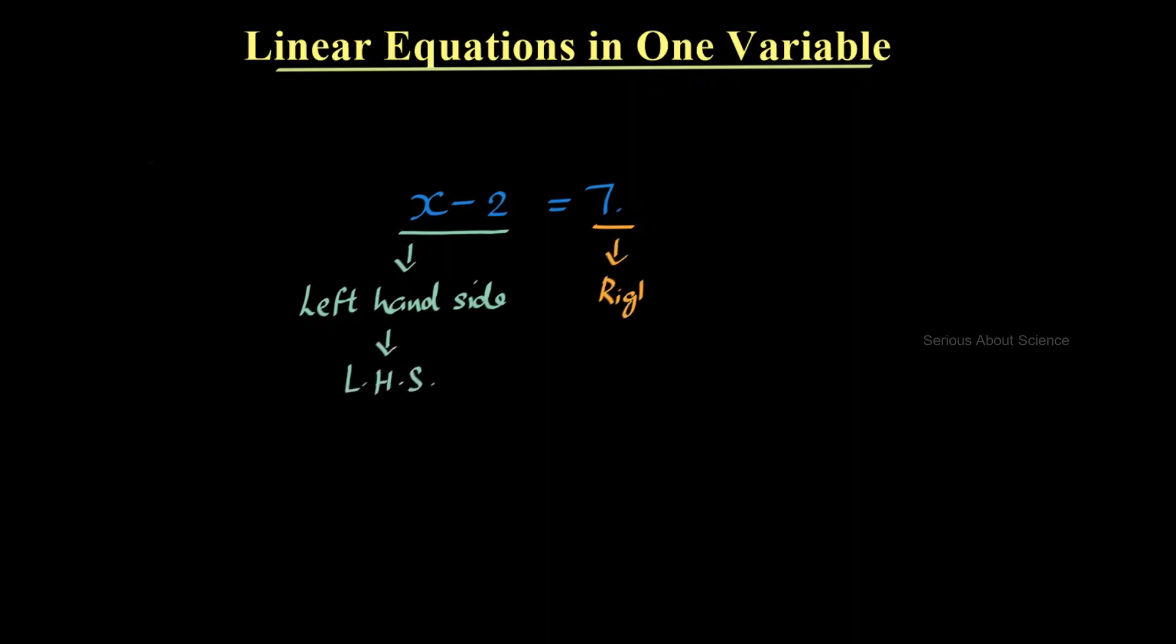Similarly, 7 comes on the right hand side and in short, I can denote it as RHS. So every equation consists of two parts. One is a left hand side and second a right hand side. And in all equations, LHS should always be equal to the RHS.